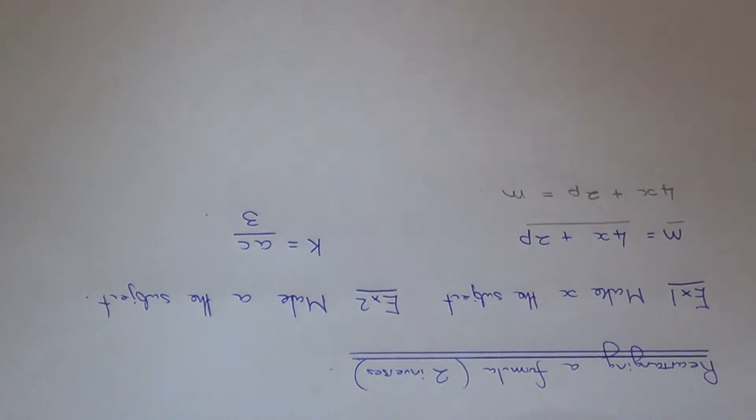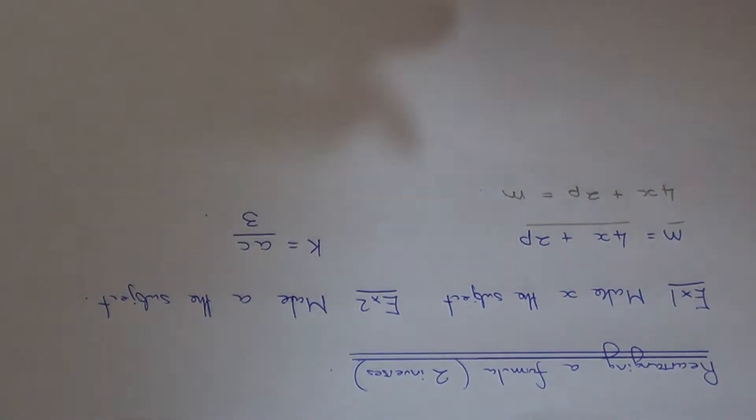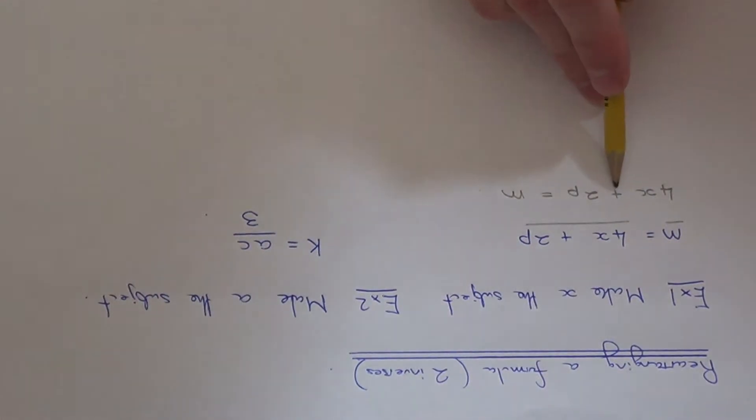We need to do the inverses in reverse order. In other words, we need to do the opposite which is furthest away from the x term, which is the plus 2p. So we need to do the opposite to that one first of all.